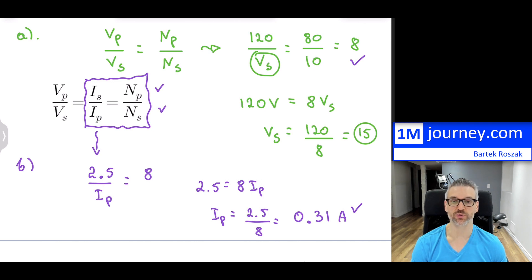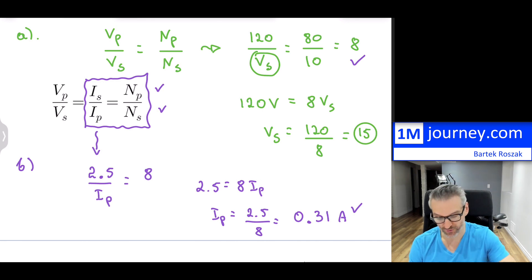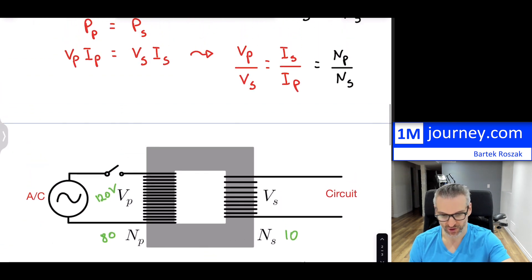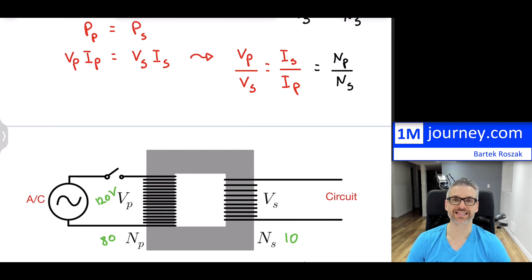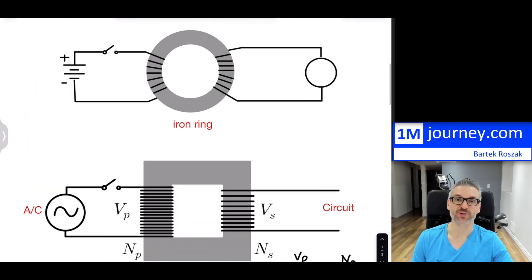That's an introduction to transformers. The calculations are straightforward, and you can now understand how power is transferred from a generator, through transformers, into cities — reducing current to minimize losses along the way. Thanks for watching, and hopefully we'll see you in another video!